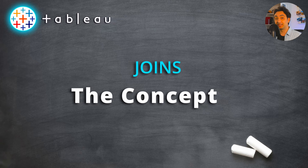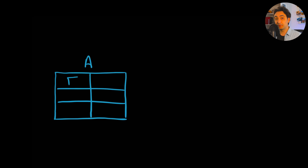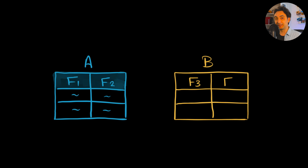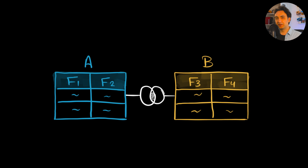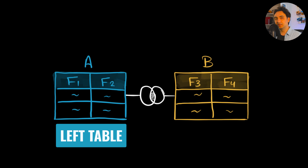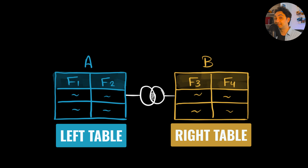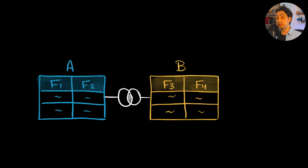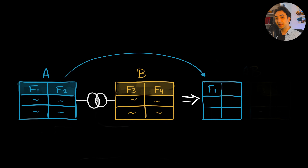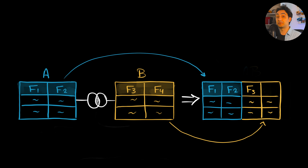Let's start talking about joining tables. We usually have two tables, table A and table B, and if we want to combine them into one big table we can use a join between them. Once we use a join, table A becomes the left table and table B becomes the right table. All the fields from the left table will appear in the output, followed by all the fields from the right table — so joins combine the columns of two tables.